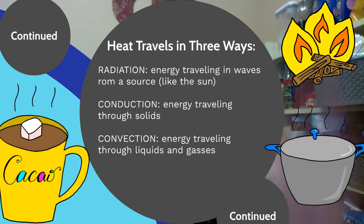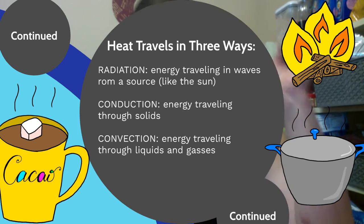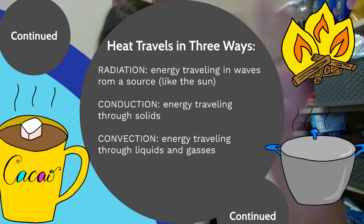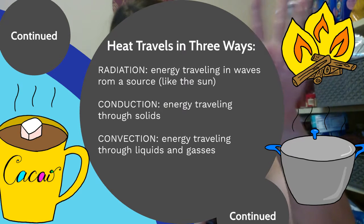Heat travels in three ways. Heat is a type of energy, and energy can travel in a bunch of different ways. There are three specific ways that heat or thermal energy can travel.